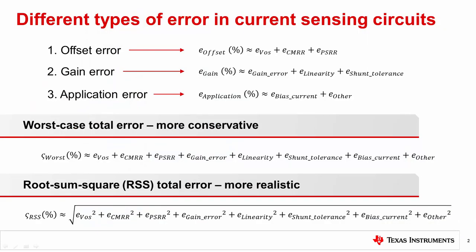There are several error sources that can affect current sensing circuits, and they can be grouped together into three main categories. The first error type is offset error. Input offset voltage VOS, common mode rejection ratio CMRR, and power supply rejection ratio PSRR all create an offset voltage at the input of the device that remains mostly constant across the entire input range. In general, offset error is the dominant error type at low input levels.